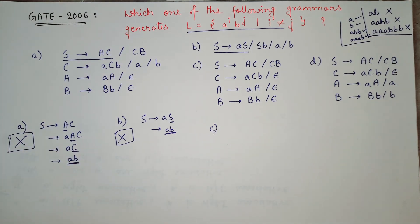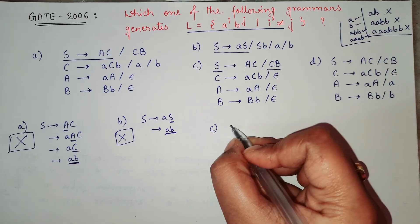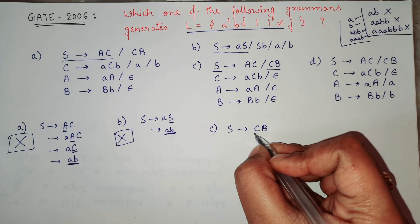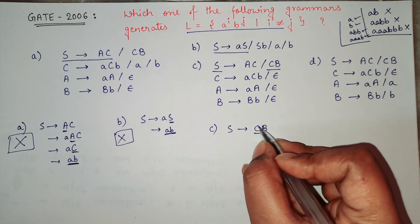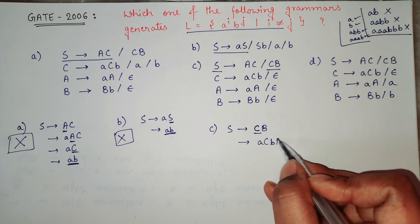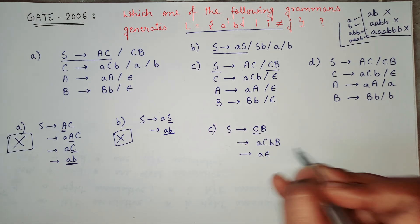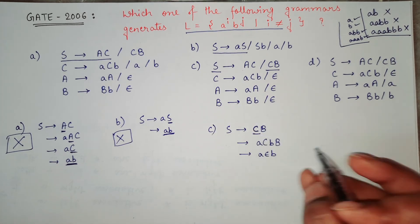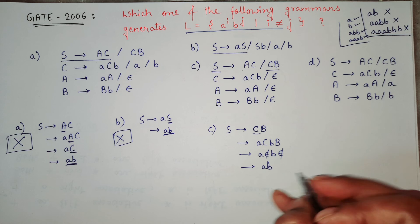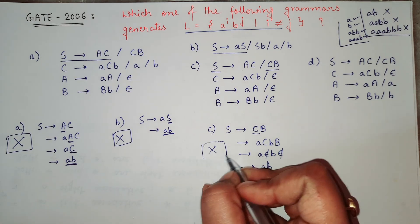For option C, let's take S → CB. Replacing C with aCb gives 'aCbB'. Now replacing C with null and B with null, we get 'ab' — again equal numbers of a's and b's. So option C also cannot be my answer.